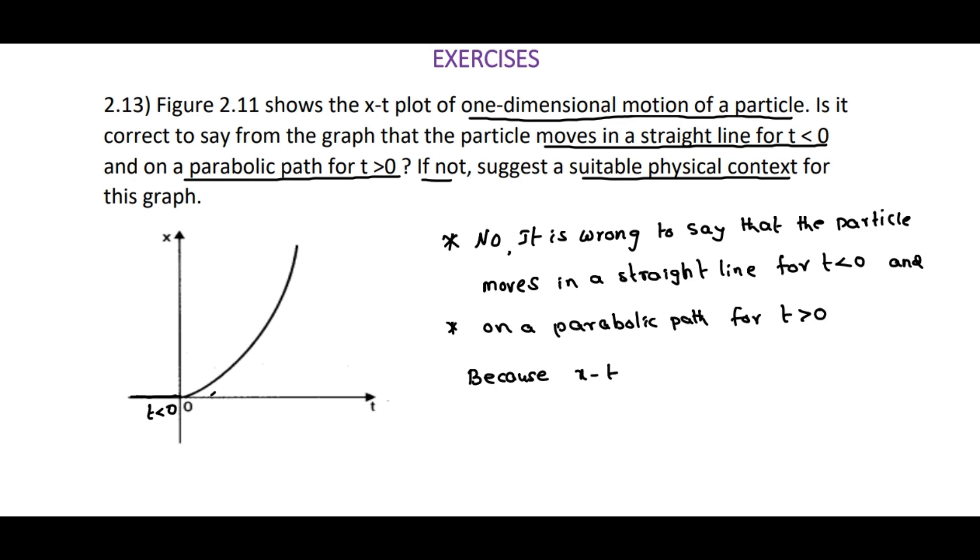Because x-t graph, the position-time graph, does not represent the trajectory of a moving particle. So when time t is less than 0, it can't be straight line, and when time t is more than 0, it can't be parabolic. And one more sub-question is asked: if not, suggest a suitable physical context. We need to give one example.